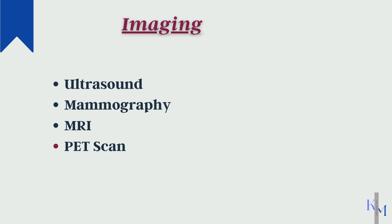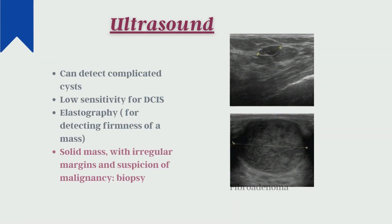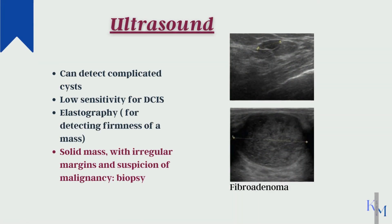The second limb of triple assessment is imaging of the breast. There are basically four imaging modalities — ultrasound and mammography are the first-line modalities, but there are some indications for MRI and PET scan too. Ultrasound is preferred in younger women because the breast tissue is dense and a mammogram cannot pick up the diseased tissue. A simple cyst appears anechoic and thin-walled; it does not need follow-up and can be treated by ultrasound-guided aspiration. More complex cysts such as an abscess or galactocele can also be appreciated on ultrasound. Fibroadenoma appears as a well-circumscribed solid mass. Elastography gives a measure of how hard a mass is. If an unusual mass appears on ultrasound, it is always followed up by a biopsy.